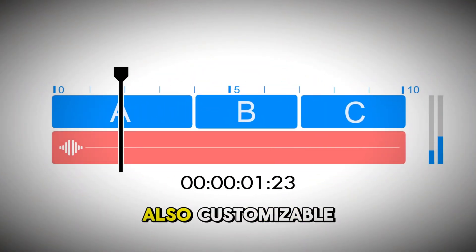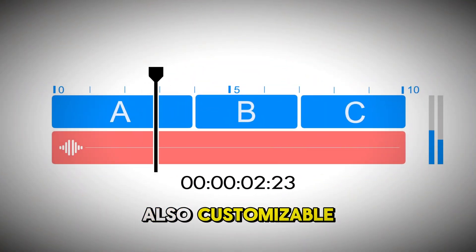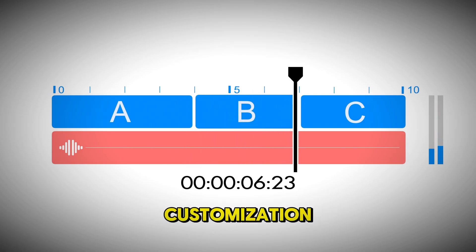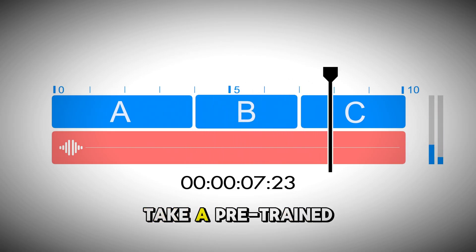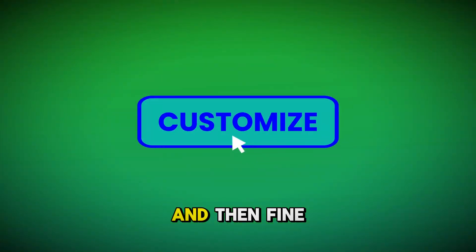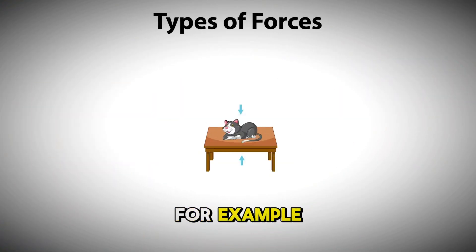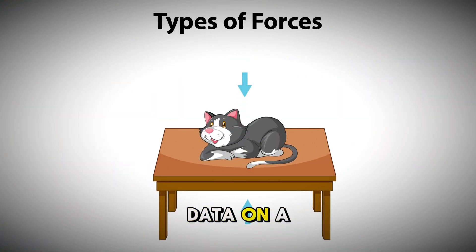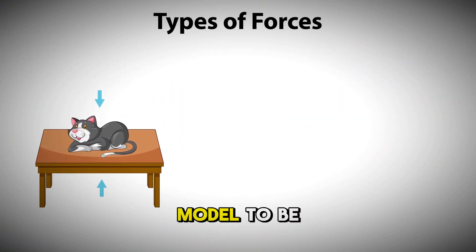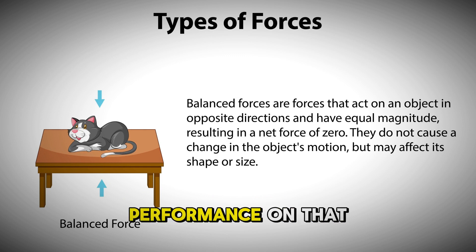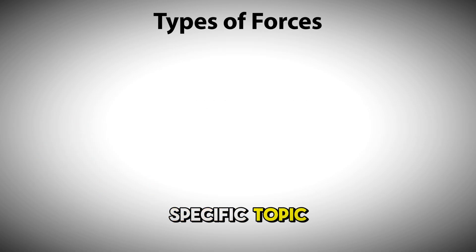Finally, MISTRAL is also customizable. In their paper, the creators talk about prompt-based customization where you can take a pre-trained model and fine-tune it on your own data to make it better at a specific task. For example, if you have data on a specific topic that you want the model to be better at, you can fine-tune it on that data and get better performance on that specific topic.